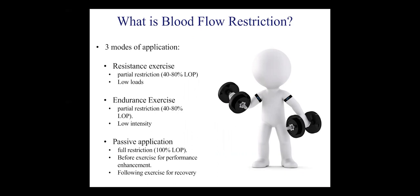The pressures typically used are between 40 to 80 percent of an individual's limb occlusion pressure, with 100 percent being the minimum pressure that fully occludes all blood flow. So by working between 40 and 80 percent we're guaranteeing that some blood flow is going to the muscle. The loads used are generally low, approximately 20 to 30 percent of your one repetition max, with no real added benefit of using higher loads.